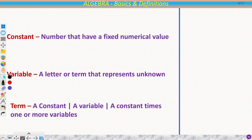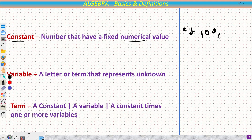Now we will see all the important terms one by one. The first term is constant. A constant is nothing but a number — a number that has a fixed numerical value. For example, 100 or 517. All such numbers are treated as constants.